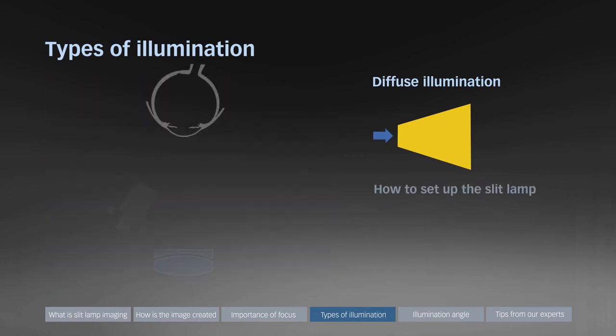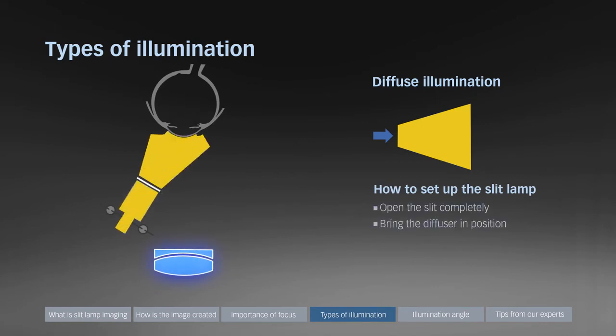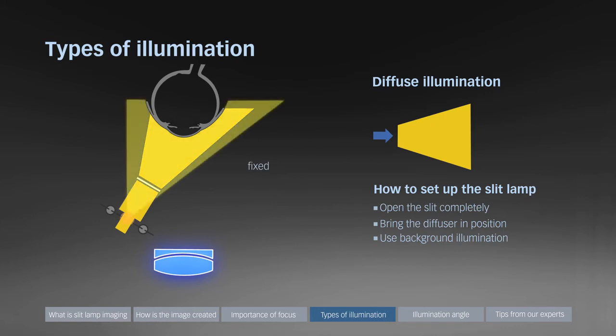To set up the slit lamp for diffuse illumination, open the slit completely, bring the diffuser in position, and use a small amount of background illumination. Haag-Streit offers two versions of background illumination: a pivoting version that allows for optimal positioning and a fixed version that is attached to the same axis as the mirror.